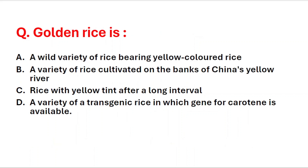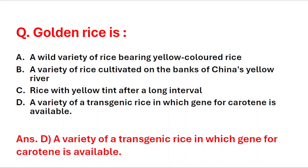Next question: golden rice is — A: a wild variety of rice bearing yellow colored grains, B: a variety of rice cultivated on the banks of China's Yellow River, C: rice with a yellow tint after a long interval, D: a variety of transgenic rice in which the gene for carotene is available. The right answer is option D, golden rice is a variety of transgenic rice in which the gene for carotene is available.